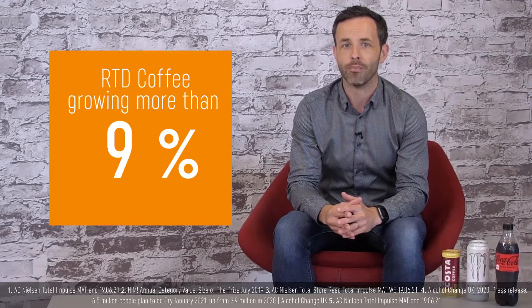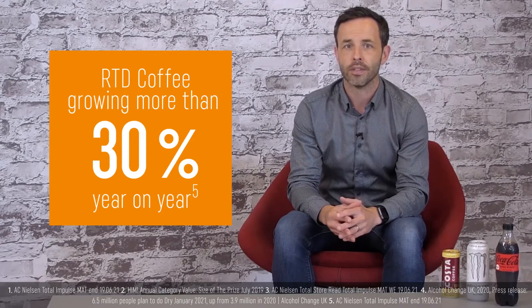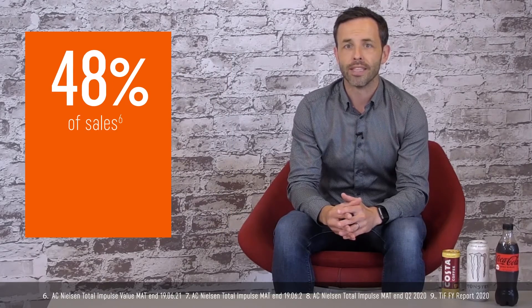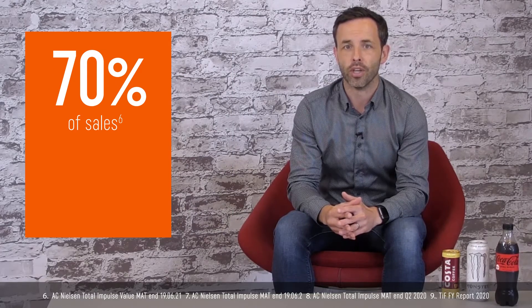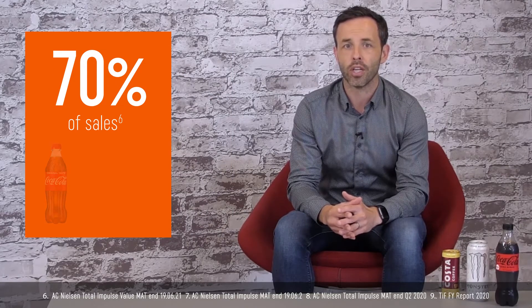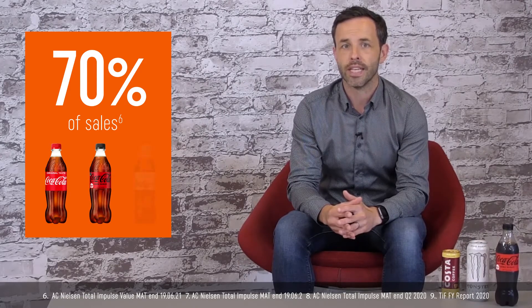Smaller emerging segments like ready-to-drink coffee are delivering rapid growth of more than 30% year-on-year. Within cola, nearly 70% of sales come from the Coca-Cola range, which includes Coca-Cola original taste, Coca-Cola Zero Sugar, and Diet Coke.